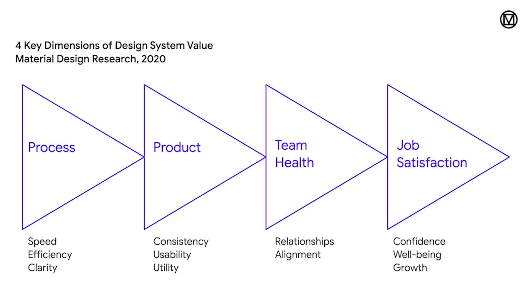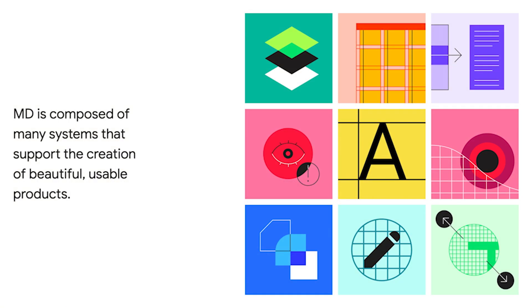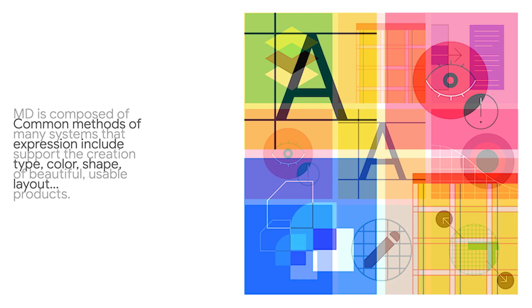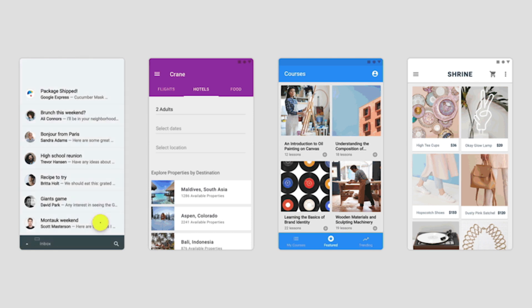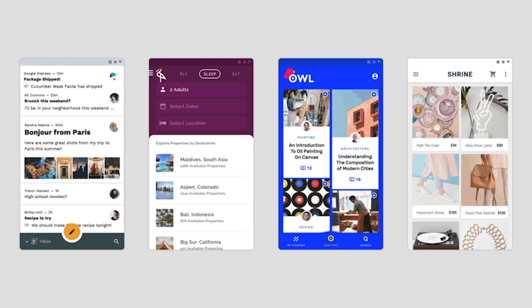Fortunately, Google's Material Design makes it easy to work from a pre-existing design framework that is customizable. Material Design is a system of systems. The broader system is composed of smaller subsystems like the color scheme, type scale, and shape family. These subsystems allow for highly flexible but consistent applications of design properties across an entire experience.